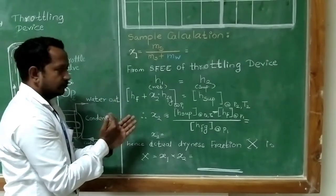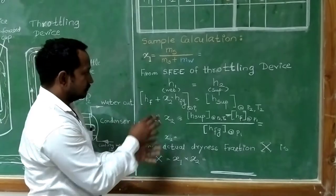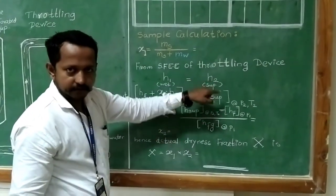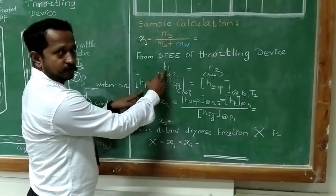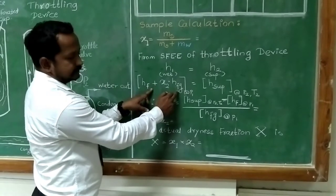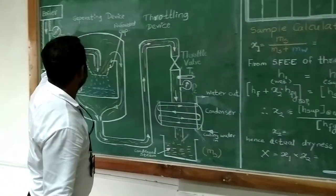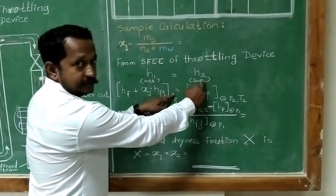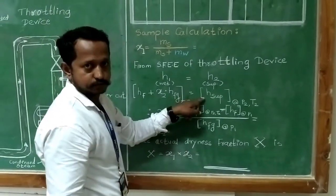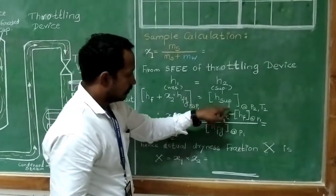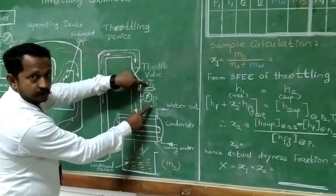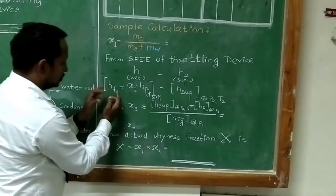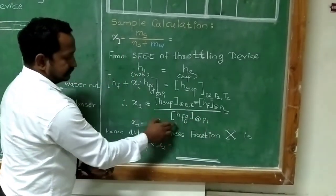Ultimately, we assume the throttling process is an isenthalpic process, in which the steam before throttling is somewhat wet. The steam after throttling is entering the superheated region. So, we can see the formula: where the steam is wet, it is hf + x2·hfg at pressure P1. This is equal to h2 at pressure P2 and temperature T2, since steam becomes superheated when passed through the throttling device. So, we can put the values and find: x2 = (h2 at P2,T2 − hf at P1) / hfg at P1.